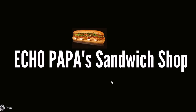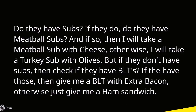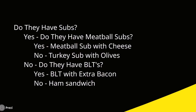Back to the sandwich shop — now your co-worker says: 'Do they have subs? If they do, do they have meatball subs? If so, I'll take a meatball sub with cheese; otherwise a turkey sub with olives. But if they don't have subs, check if they have BLTs. If so, give me a BLT with extra bacon; otherwise just give me a ham sandwich.' This is stuff we encounter every day, and conditional branching works exactly the same way.